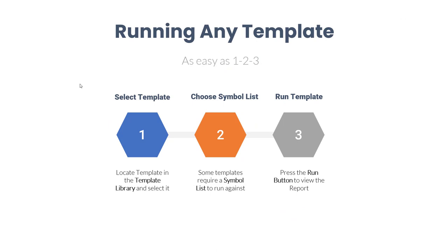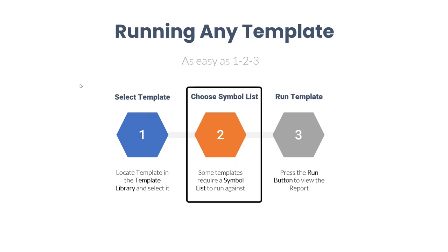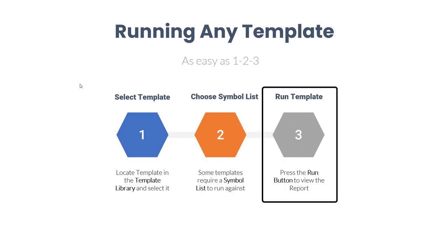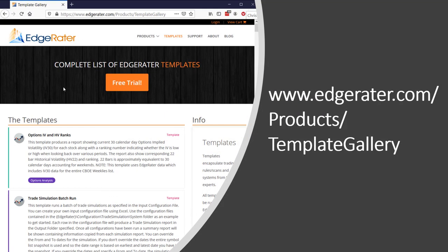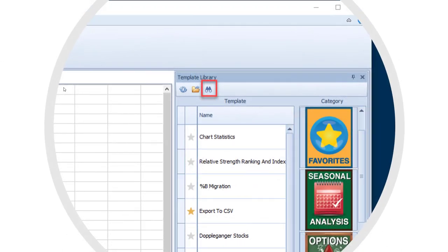Remember from the previous video that running any template in EdgeRater is as easy as 1, 2, 3, where you first find and select your template, then choose a symbol list to run the template against, and then press the run button to view the report. You can find a complete list of all EdgeRater templates on the website at www.EdgeRater.com/products/template gallery, and you can get to the same place in the EdgeRater application by clicking on the binocular icon in the template library.